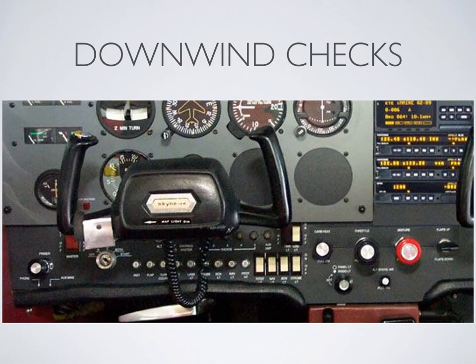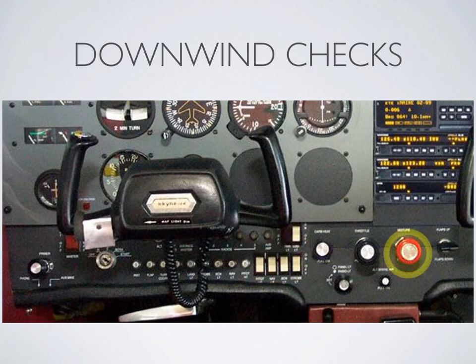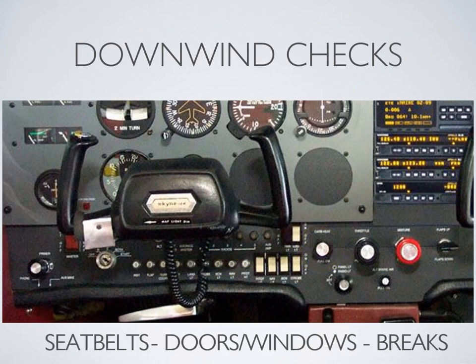The downwind checks follow a flow: primer locked, master on, mags on both, oil temperature and pressure in the green, lights on, carb heat hot, mixture rich, fuel on, circuit breaker check, carb heat cold, seat belts, doors, windows, and brakes. Note that the circuit breakers are typically to the right of the mixture knob.